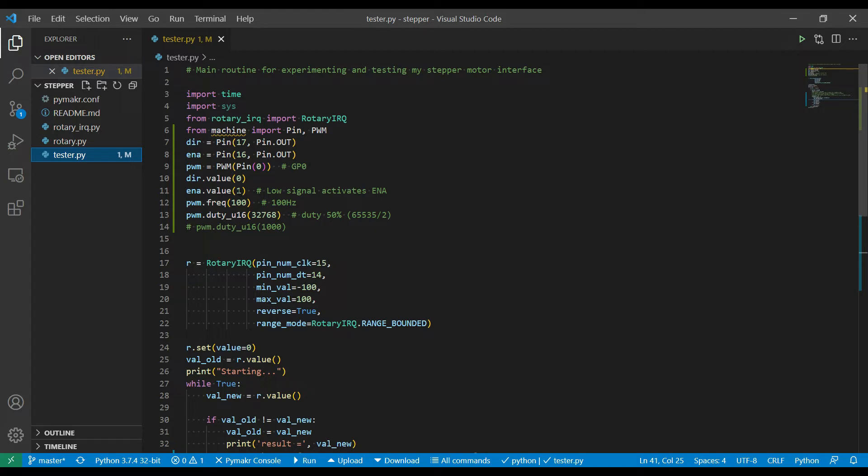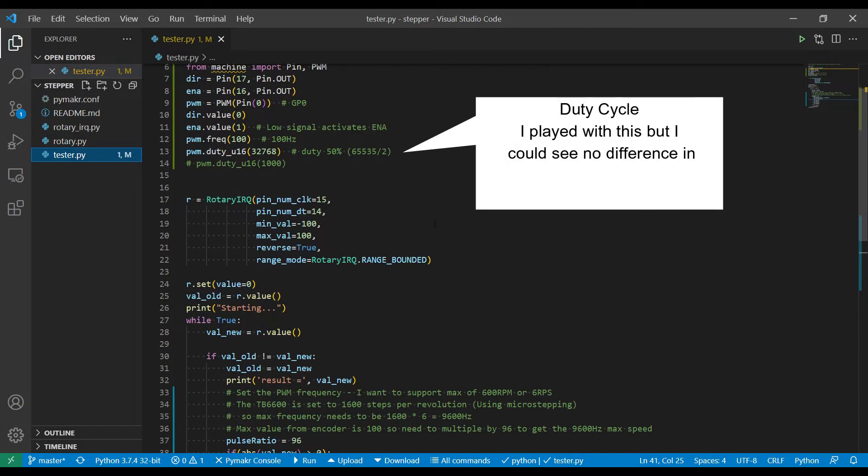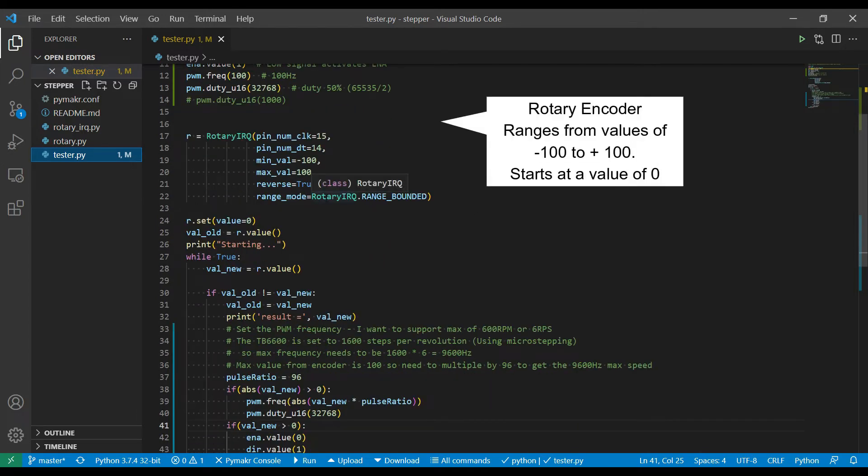So that's going to give the stepper pulses that will control the speed of the motor. I'm going to set some variables: set the direction pin to zero, the enable pin to one, which the high value means it's disabled, and initial frequency for the pulse width modulation to 100 hertz. And I'm going to set the duty cycle to 50%, so this is half of 2 to the 16. Set up the rotary encoder.